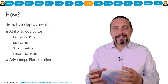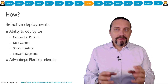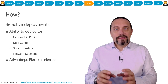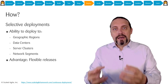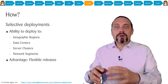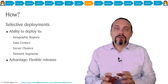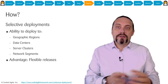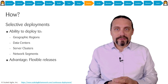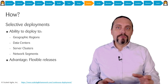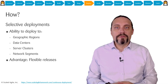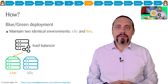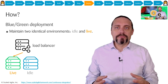By using selective deployments we are very flexible when it comes to releasing. We can deploy to only one geographic region, one data center, one server cluster, or one network segment. This enables us to lower risk and have more flexible releases. Another practice used in deployment is blue-green deployments.